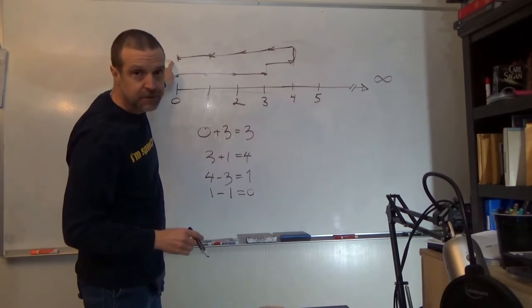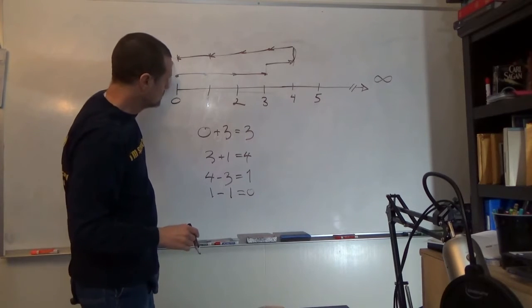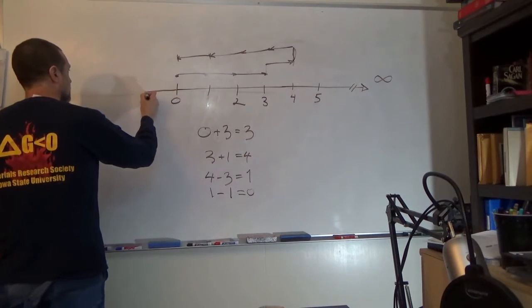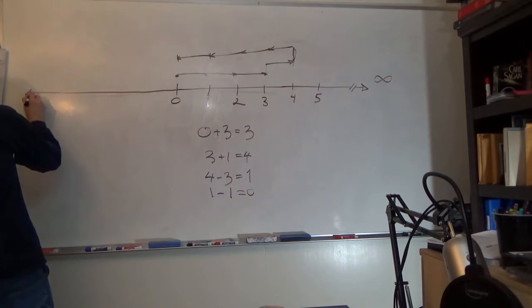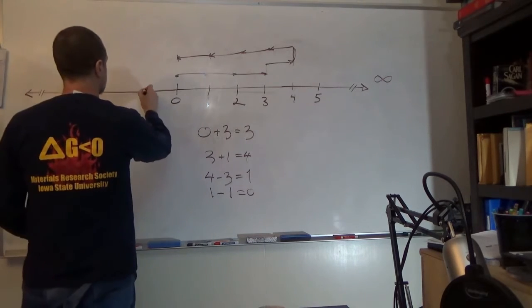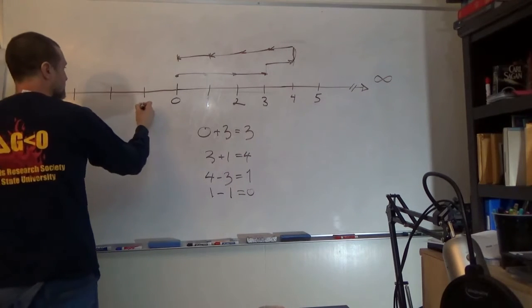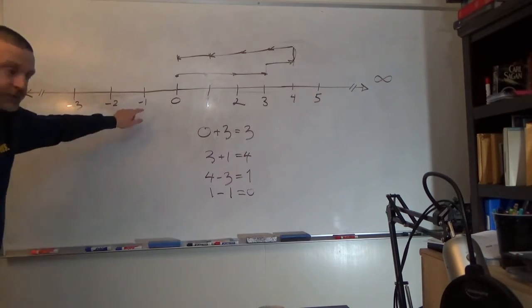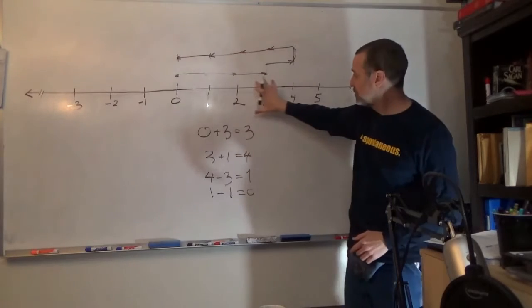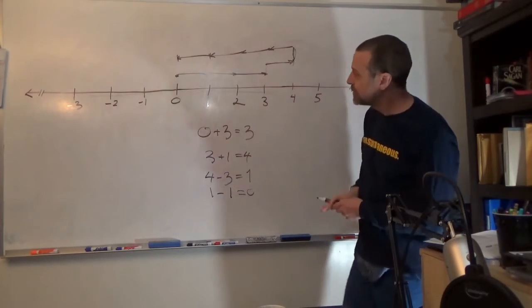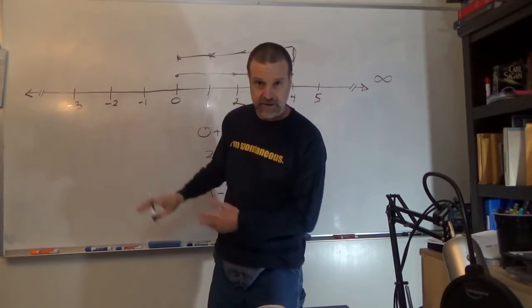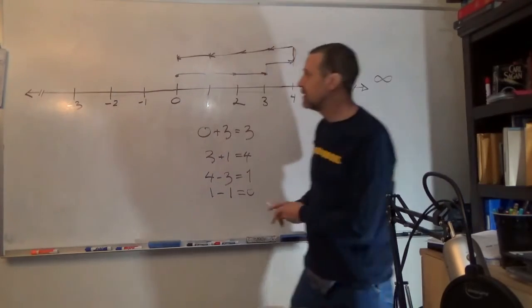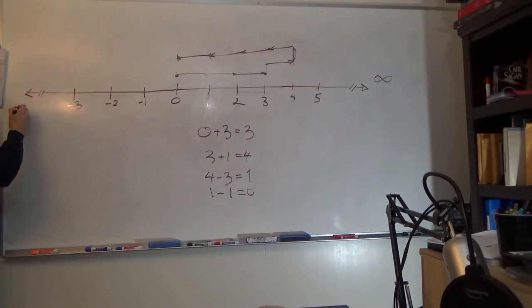What if I take 0 minus 2? Well, what we do is we take this number line and we continue it. So this is negative 1, negative 2, negative 3. So this side of the number line, we call these positive integers. This side of the number line, we call negative integers. And these negative integers, just like the positive integers that go off to positive infinity, well, these negative integers, they go off to negative infinity. And you have just as many negative integers as you have positive integers.